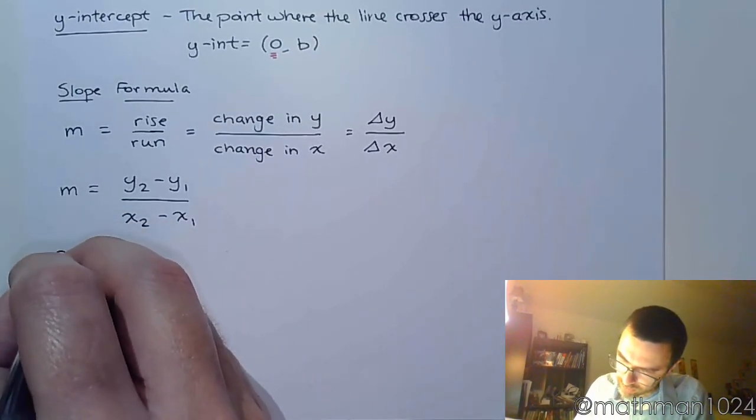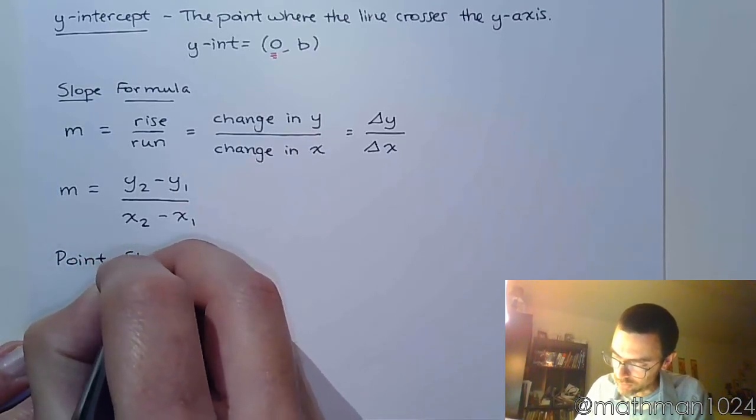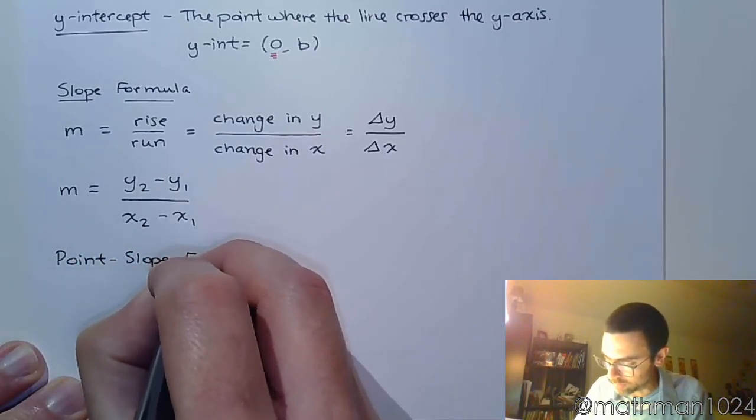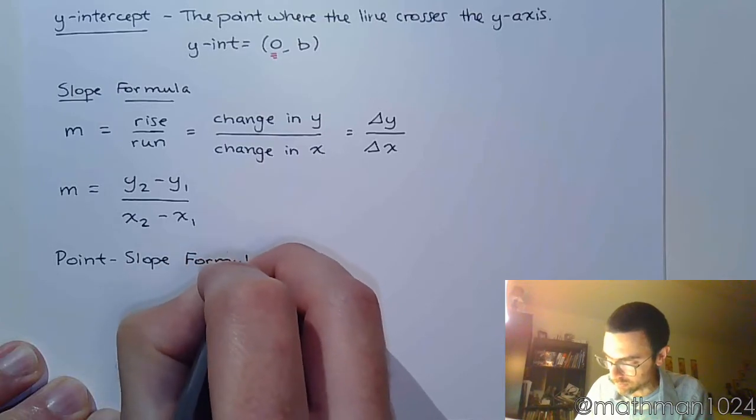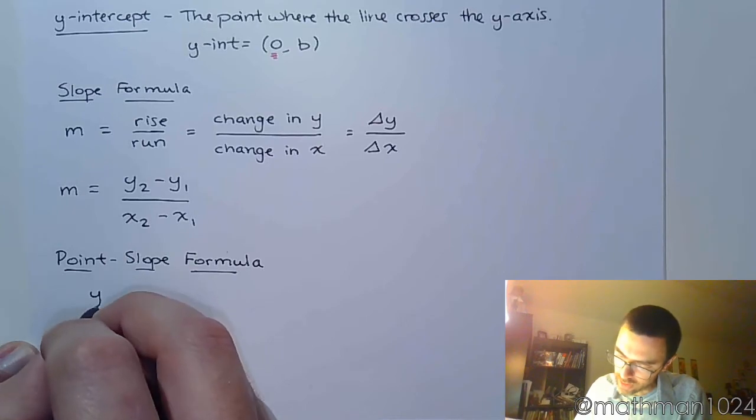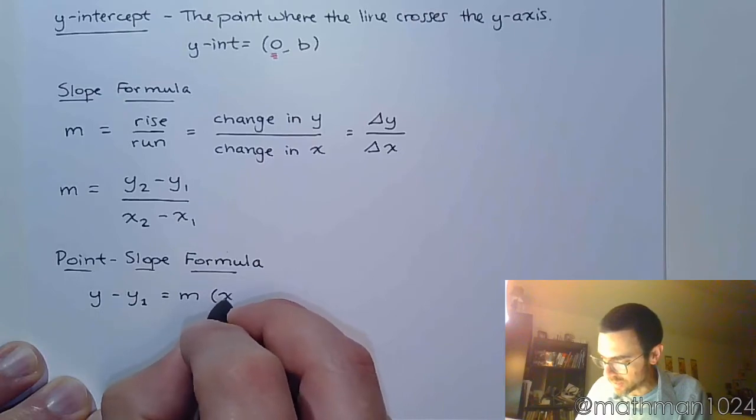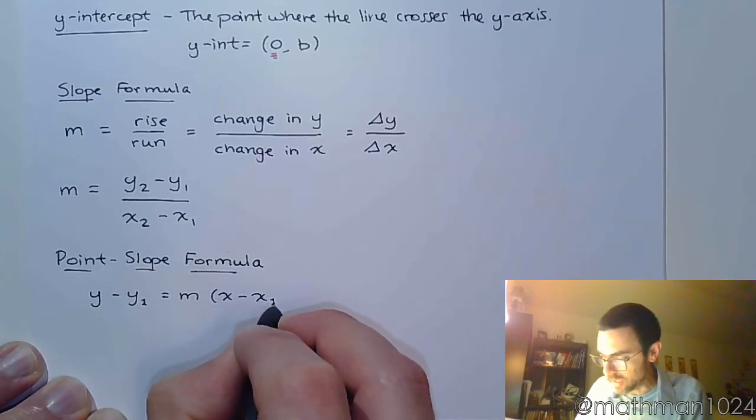And then finally, we have the point-slope formula. The point-slope formula is y minus y1 equals m times x minus x1.